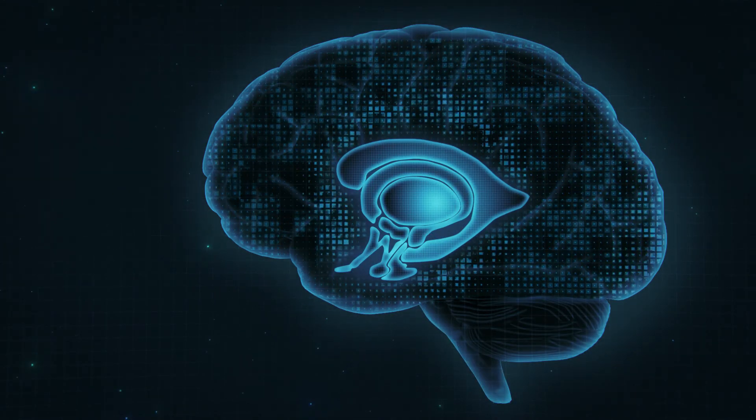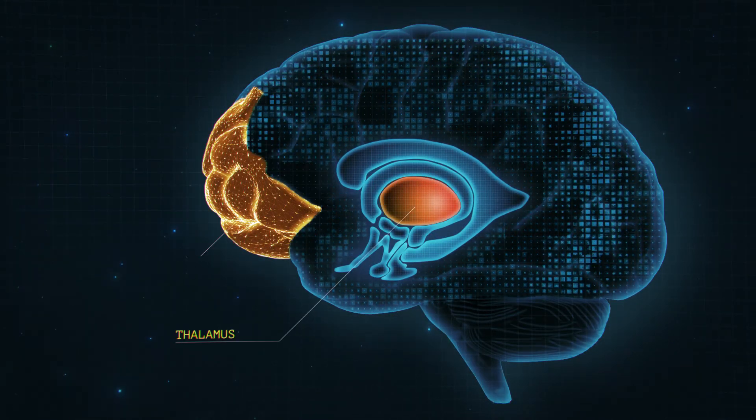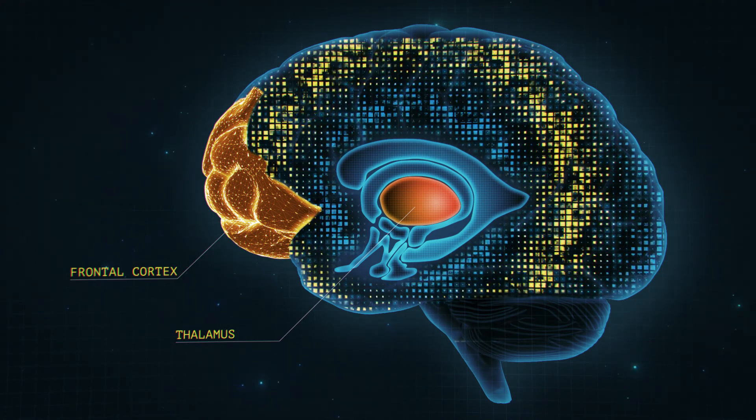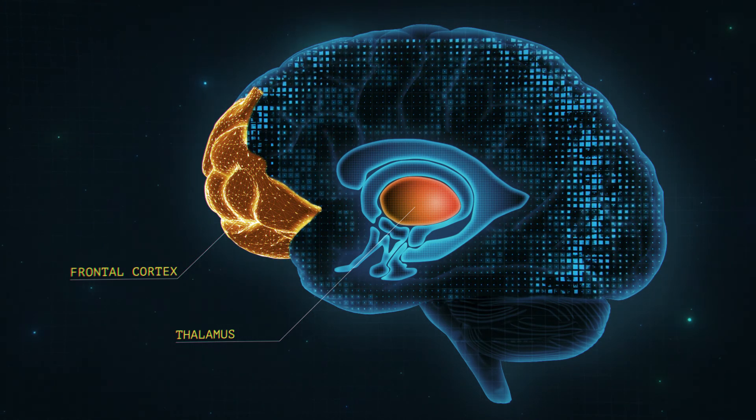This step starts with attention, which involves the thalamus and the frontal cortex. Attention can be enhanced through emotion, which involves the amygdala.